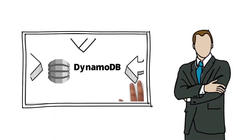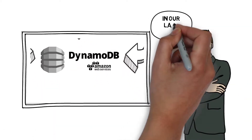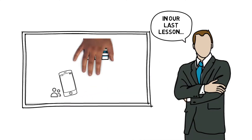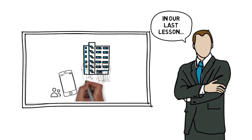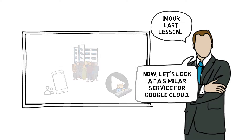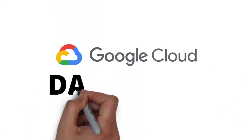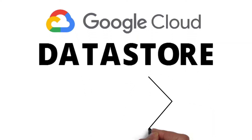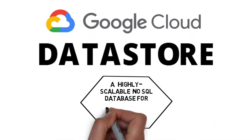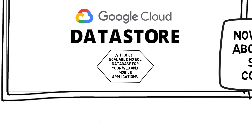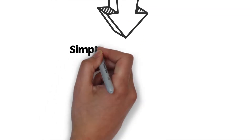In our last video we saw how the NoSQL service DynamoDB could help you store and manage data in a quick and flexible, endlessly scalable manner. Now that we've seen what AWS has to offer in this space, let's have a look at what Google Cloud has available. Google Cloud offers another service called Datastore — a highly scalable NoSQL database for your web and mobile applications, very much like DynamoDB in AWS and Blob Storage for Azure.